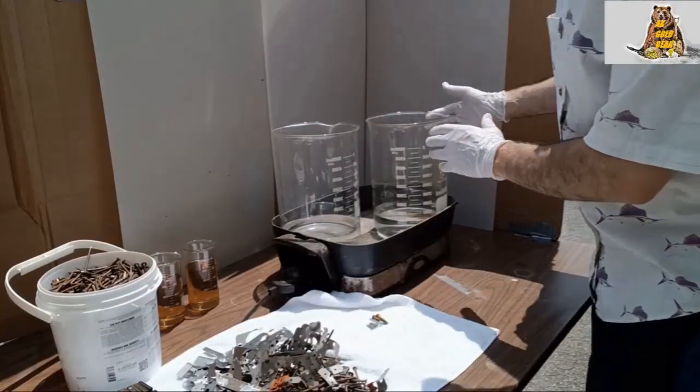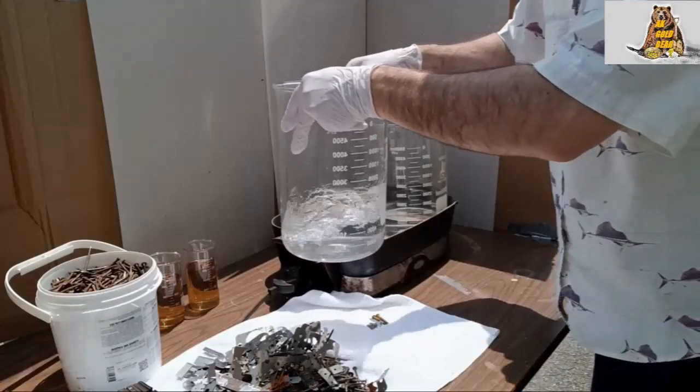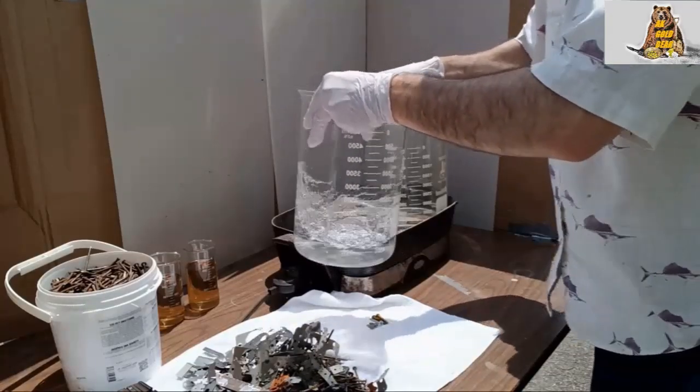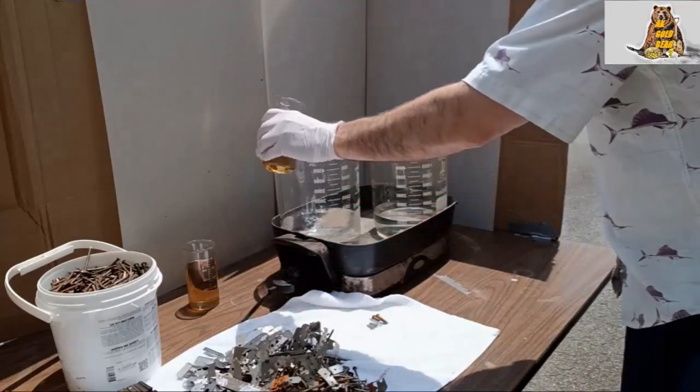To make electrolyte battery acid, I will mix water with electrolyte. Oh, I'm sorry, this is sulfuric acid. Please be careful, very strong acid.